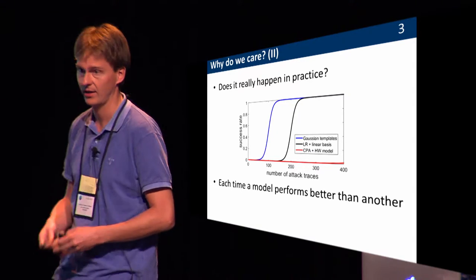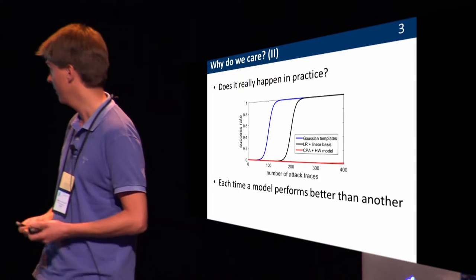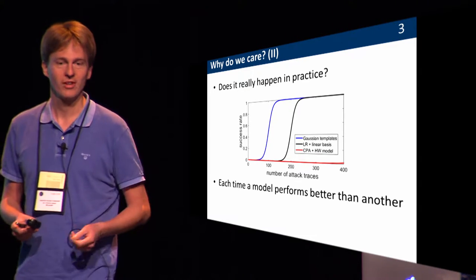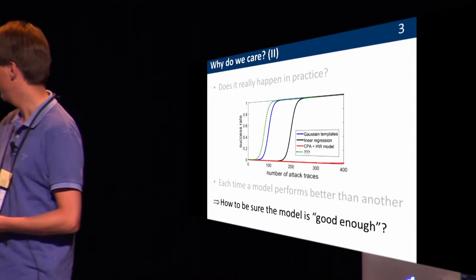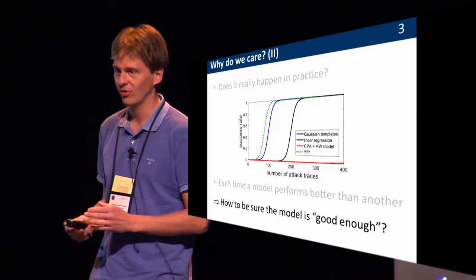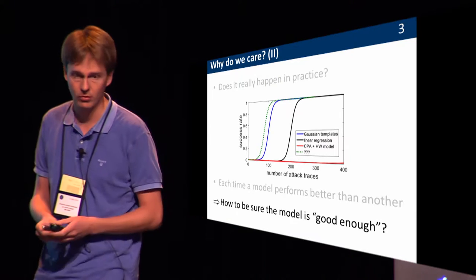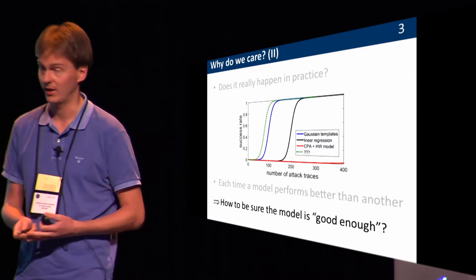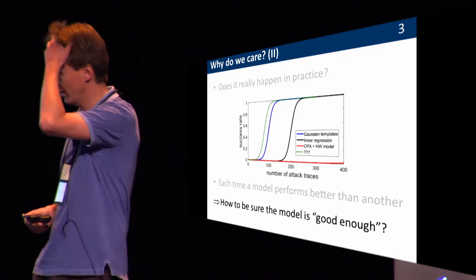What we did afterwards is linear regression with a linear basis — better — and then Gaussian templates — better. You can say we know Gaussian templates are very powerful, so maybe we can stop there. But how do we know? If you take an unprotected device, Gaussian templates are good enough most of the time, but if you take something masked — as in the previous talk — probably the leakage distribution is not just Gaussian; it's a Gaussian mixture or something else. So again, how to be sure the model is good enough?